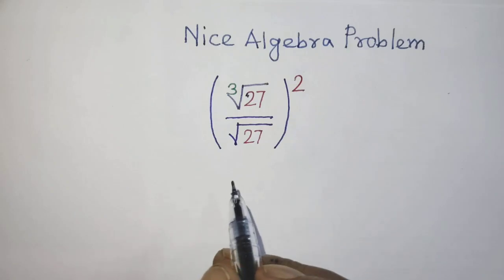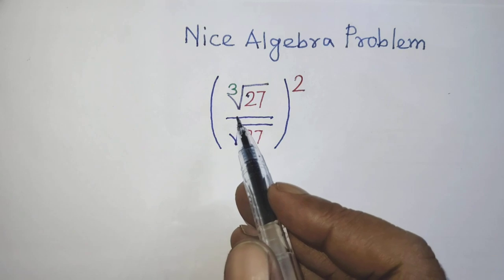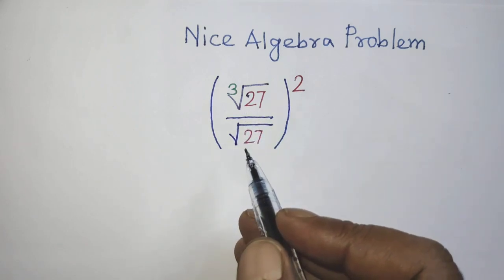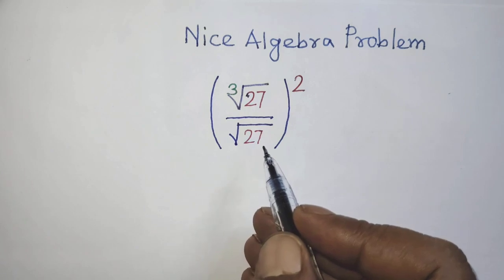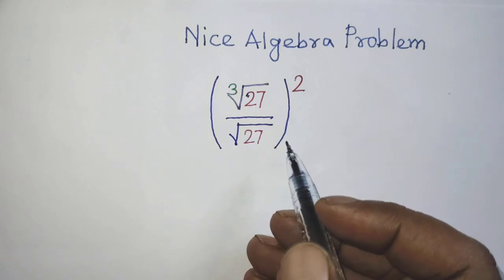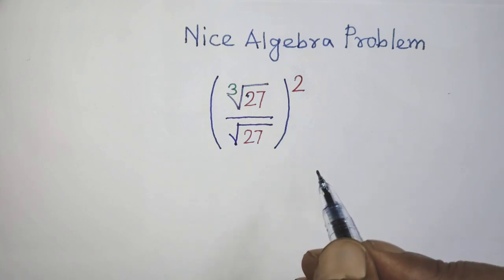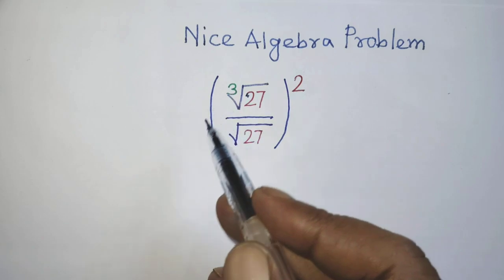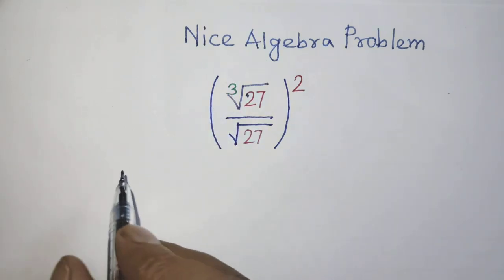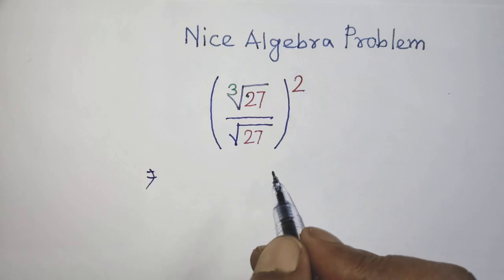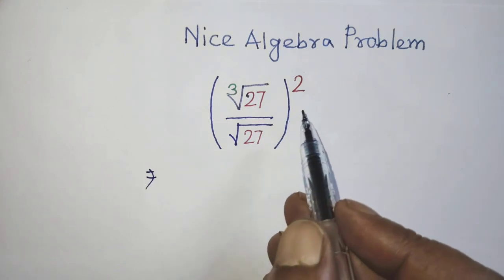Hello guys, you are welcome to solve this math problem which is: cube root of 27 over square root of 27, whole to the power 2. Today I am telling you how to simplify this algebraic expression.